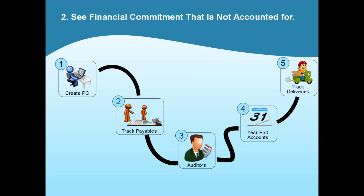If you have placed a purchase order with a supplier and they have either started to manufacture or have shipped the goods, then you most likely have an obligation to pay at some point, even though your accounts don't yet show a purchase invoice. This is important when producing the year-end accounts and auditors often require it.